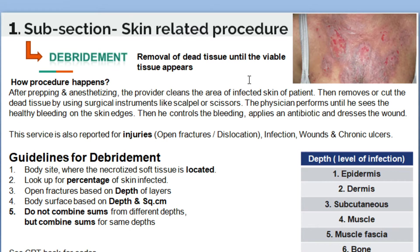For this kind of patient, the physician will prep and wrap the infected area, anesthetize it, and clean the infected area. Then he removes or cuts the dead tissue using surgical instruments like a scalpel or scissors. There are also other surgical instruments used depending on the type of disease condition.